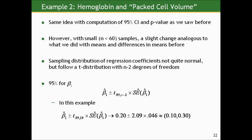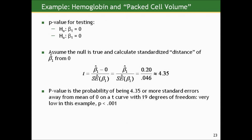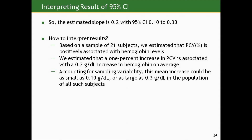To get a 95% confidence interval for the true slope, we take beta-one-hat and add and subtract the number from a t-distribution with 19 degrees of freedom that cuts off 95% in the middle — which is 2.09 instead of 2. The resulting confidence interval is 0.2 plus or minus 2.09 times 0.046. For the p-value testing the null that the true slope is zero, we calculate the standardized distance: 0.2 divided by its standard error gives 4.35 standard errors above zero. The p-value from the t-distribution with 19 degrees of freedom is less than 0.001, consistent with the confidence interval not including zero.